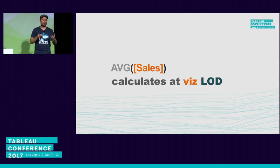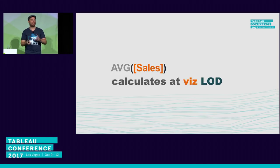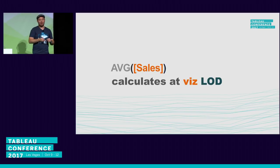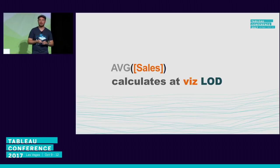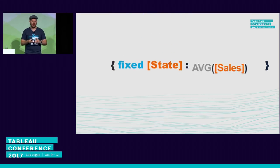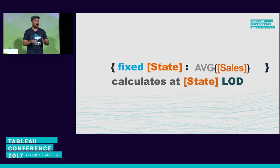When you write something like average sales, Tableau computes at the level of detail of the visualization. But sometimes you want a custom level of detail — that's where LOD expressions come in. You wrap the calculation in curly braces and specify, for example, fixed state, and this computes at the state level regardless of what your viz's level of detail is. Even if you have category in the view, it will still compute at state level.